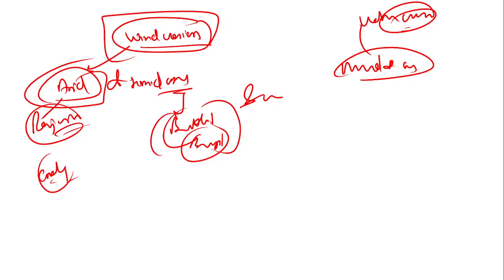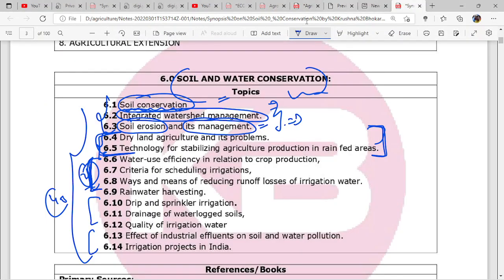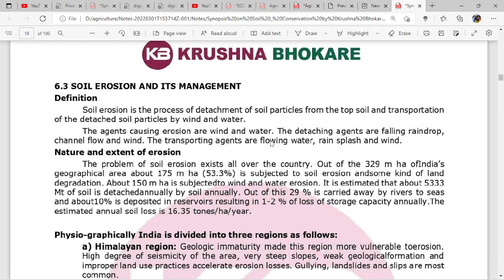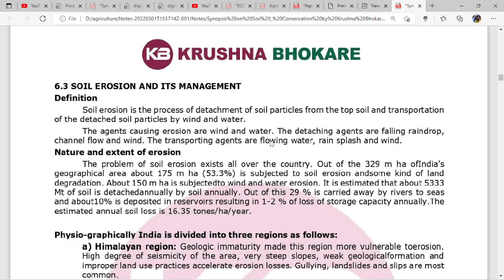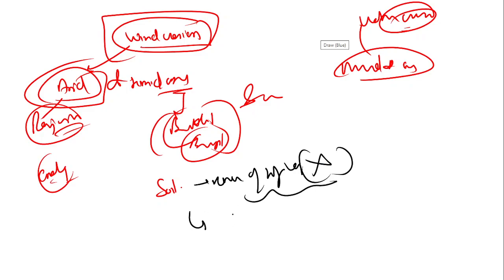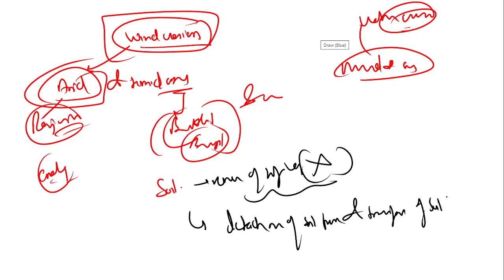Now we will see the content we need to take care of. Soil erosion contains two important components we have to remember. From now onwards, you will not use the old definition. You will use the definition of two processes: detachment of soil particles, and transportation of soil particles from their original position. These two keywords - detachment and transportation - are what you must remember.